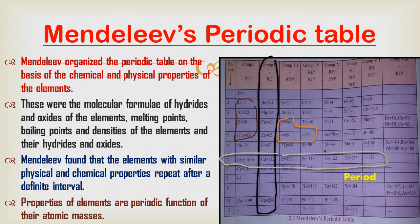If you look at the periodic table alongside, you can see that only atomic masses are given but some elements were unknown at the time. Question marks are also present for some elements, meaning the atomic masses are noted but the elements are unknown, or there is confusion between the atomic masses or the identity of those elements. Let us understand why there is a question mark.